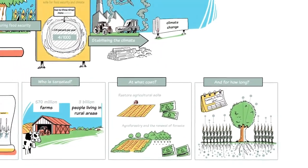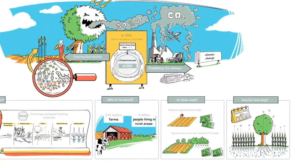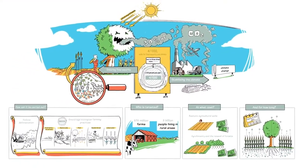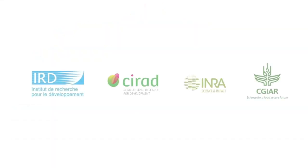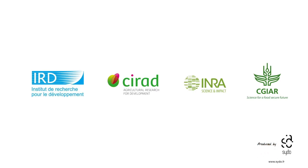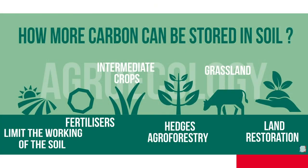To recap the six suggested approaches to storing more carbon in the soil: the first is to limit the working of the soil — you might know this already as low-till or no-till, or conservation agriculture — where we're not plowing the soil multiple times per year and leaving it bare.